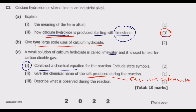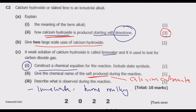Part three: describe what is observed during the reaction. What is observed is that the limewater turns milky. The carbon dioxide reacts with calcium hydroxide to form calcium carbonate, which is a white precipitate. This white precipitate is responsible for the milky appearance of the solution.